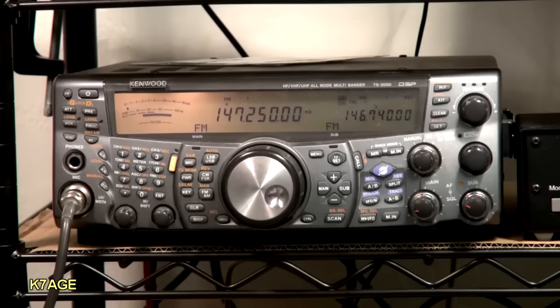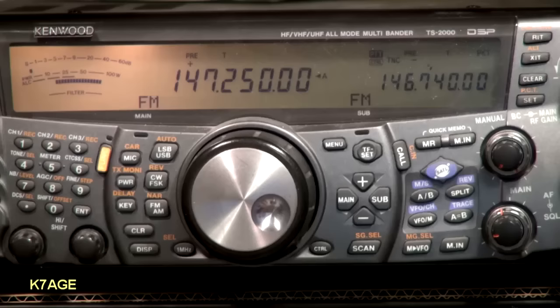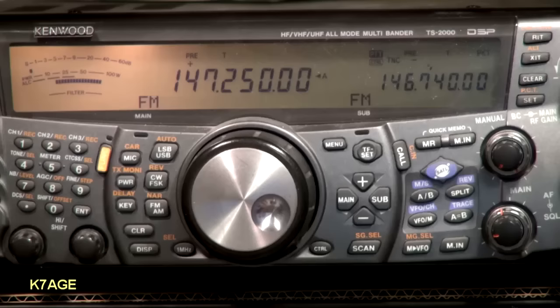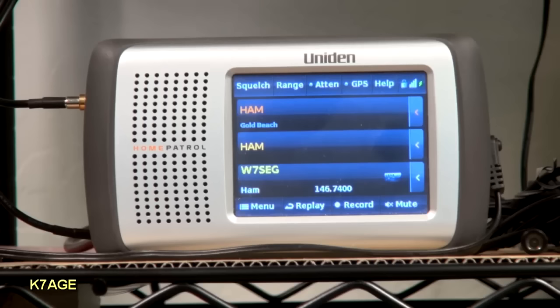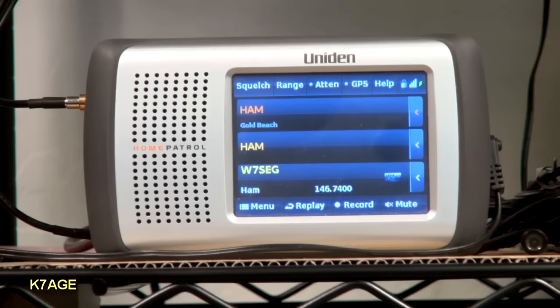My Elecraft K3, my Kenwood TS-2000, which has a main and a sub receiver. So on the main I can have HF typically and on the sub I can have either 2 meter or 450. Or a lot of times I use it to monitor two different 2 meter repeaters here in the area. And my fourth source will be my Uniden Home Patrol scanner.